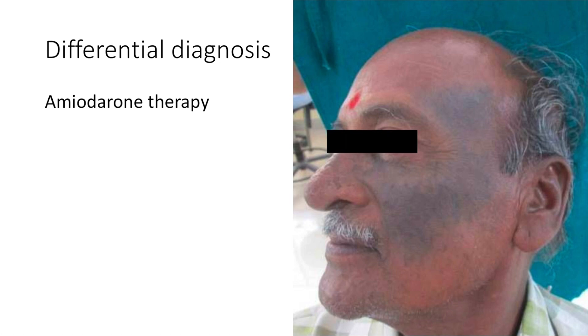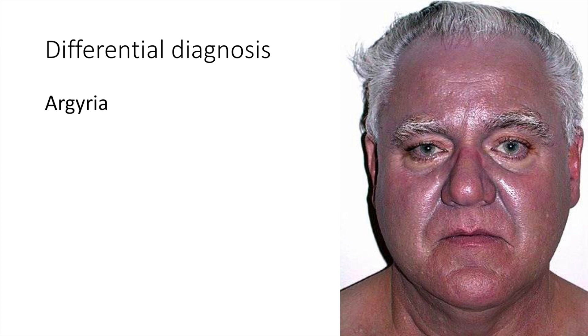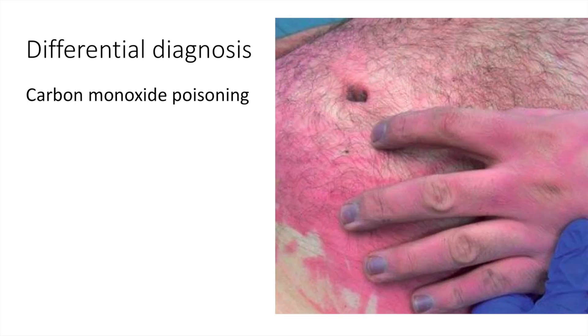The differential diagnoses of cyanosis are few. These include amiodarone therapy, which can cause bluish pigmentation as seen here; argyria, which indicates deposition of silver salts in the skin; and finally, carbon monoxide poisoning, although this is not considered true cyanosis. That's it for our lecture on cyanosis — thank you, and I will see you in the next video.